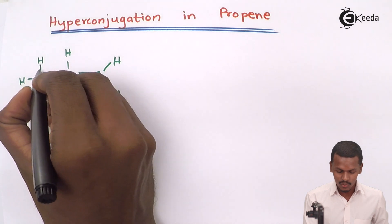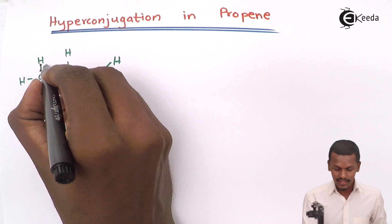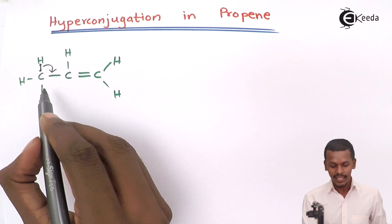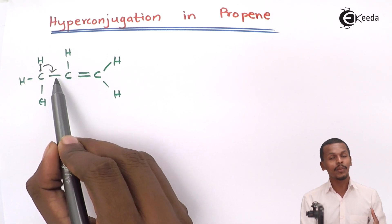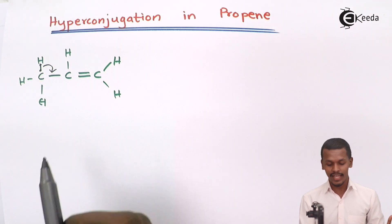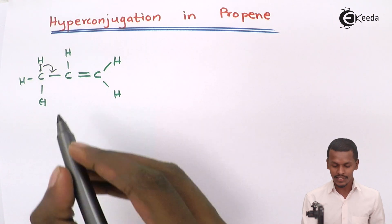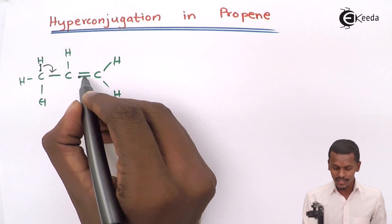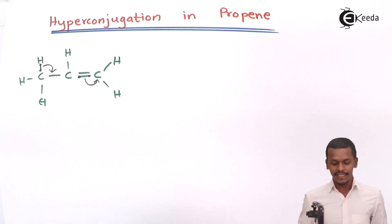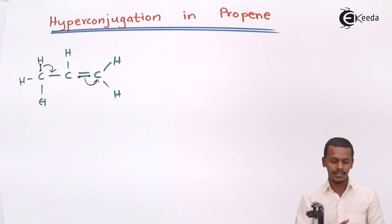These two electrons between the hydrogen and the carbon atom shift over here. Obviously then this carbon will become pentavalent — basically this carbon will have five bonds attached to it — so that kind of carbon is very unstable. That's the reason these two electrons will also be shifted onto this carbon atom, similar to resonance.